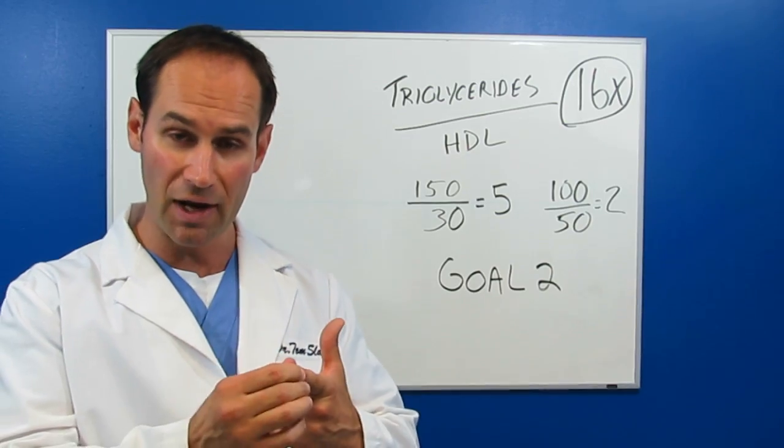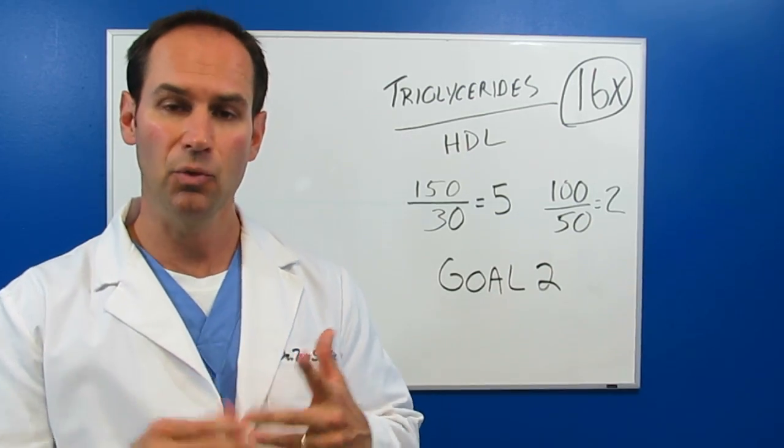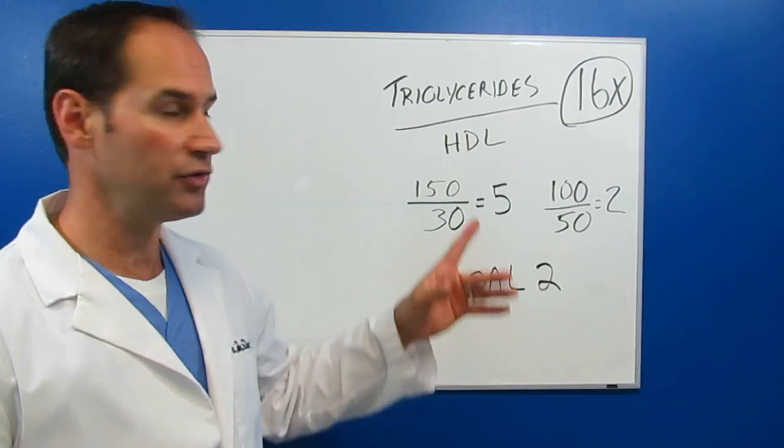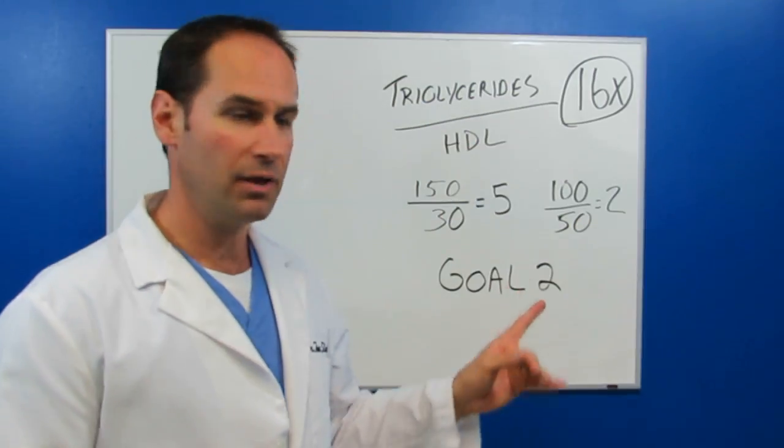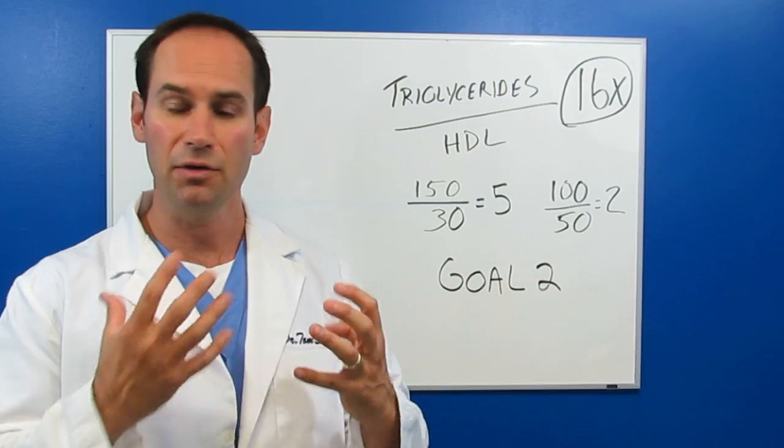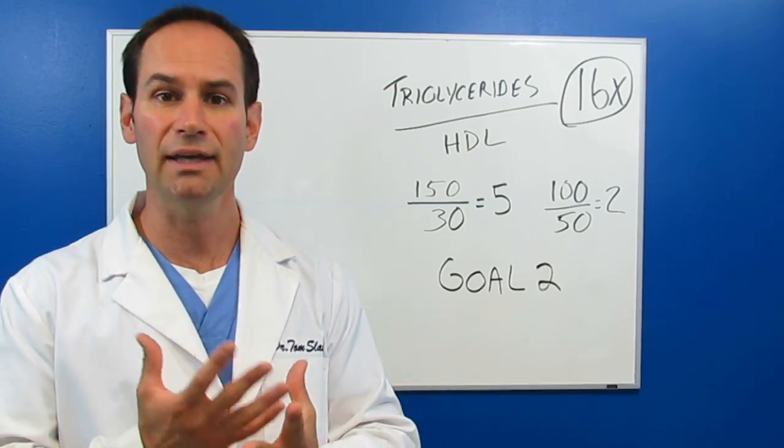Find out your total, your triglycerides and your HDL. What you're going to do is you're going to divide those two numbers. You're going to put the triglycerides on the top and the HDL number on the bottom. You're going to divide that and you get the ratio. You're going to get a number.